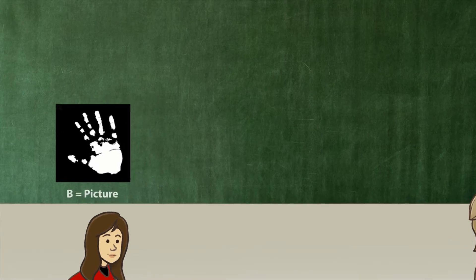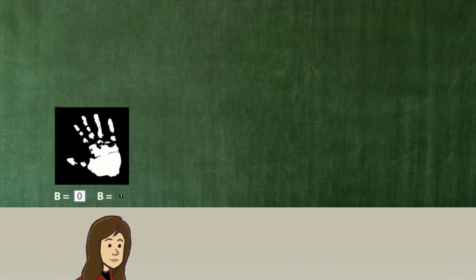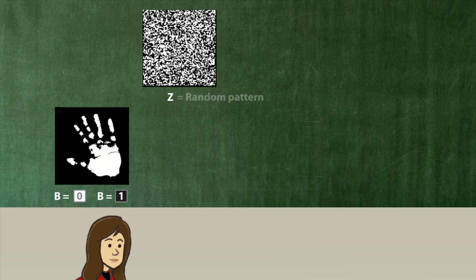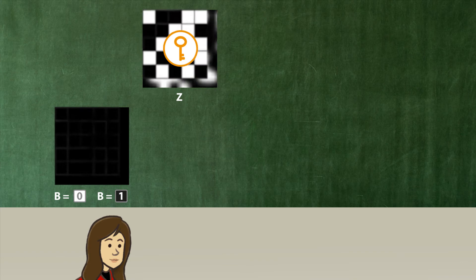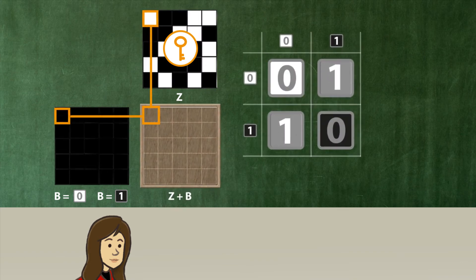We encrypt the picture in zeros and ones and add a random pattern z. The random pattern is the key. It turns every bit around if z equals one, otherwise not.